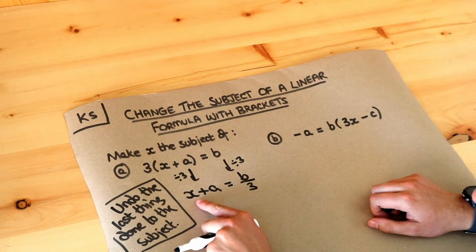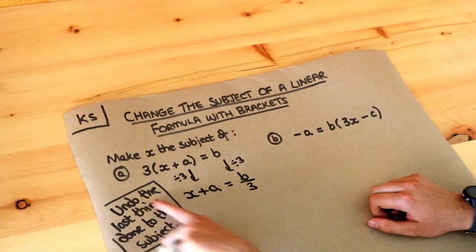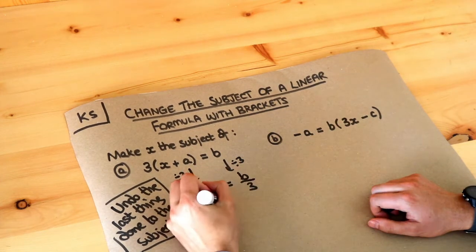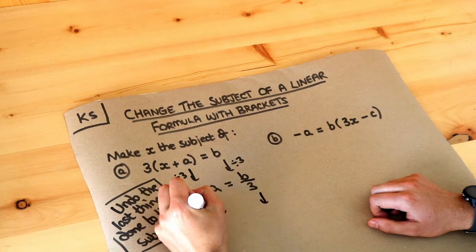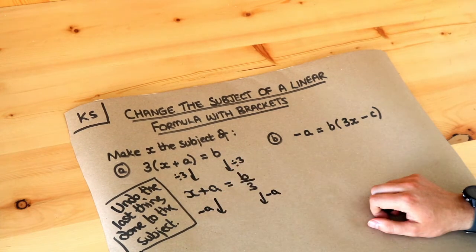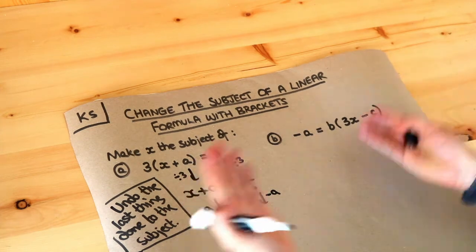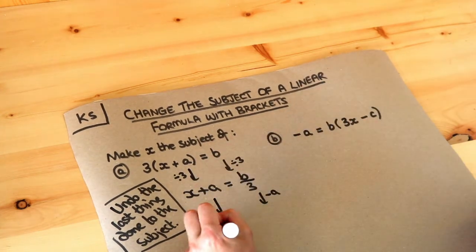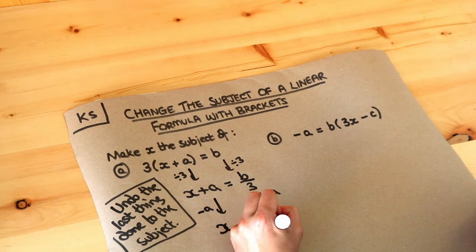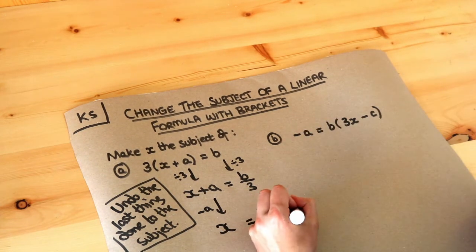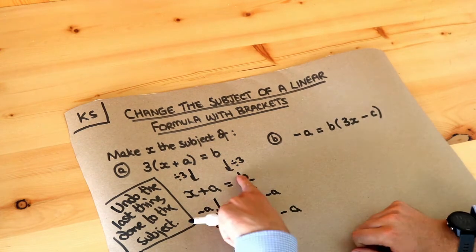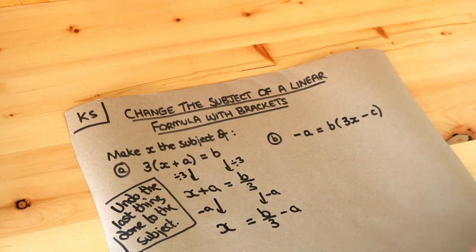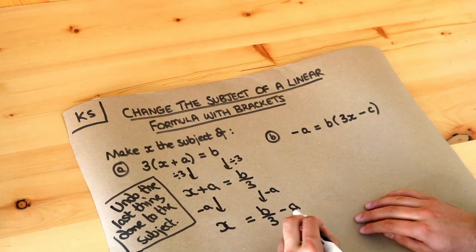Now what's the story of what's happening to x? We use the step again: undo the last thing done to the subject. Well, x — we're adding a to it. We want to get rid of that plus a, so we do the opposite which is to subtract a. Remember what we do to one side of the equation we have to do to the other side to balance it. So minusing a gets rid of that plus a, leaving just x. And then it's b over 3 minus a. Notice the minus a is outside the fraction, because the b has been divided by 3 and then we're subtracting a — it's not b minus a all over 3, because that would be the wrong order. So that's the final answer.